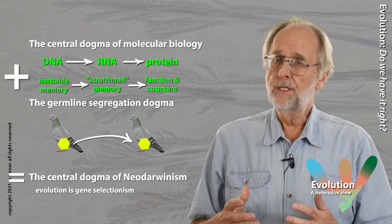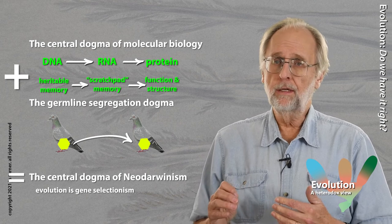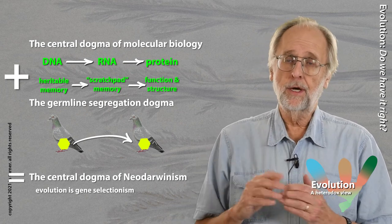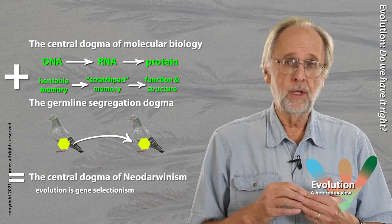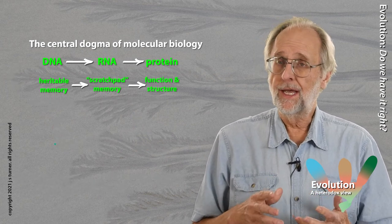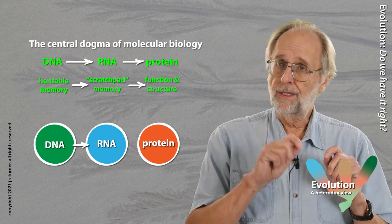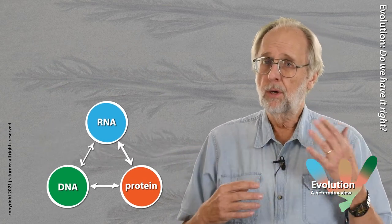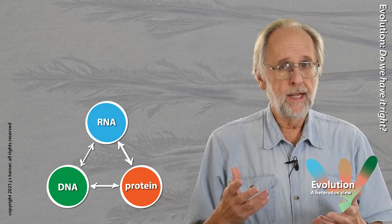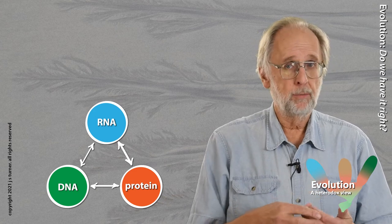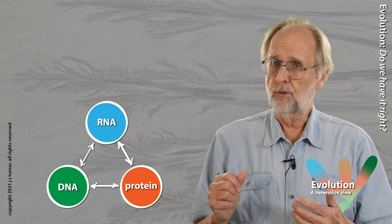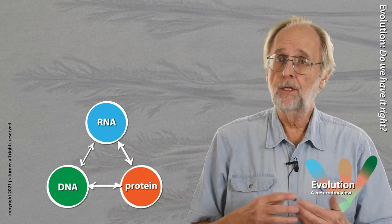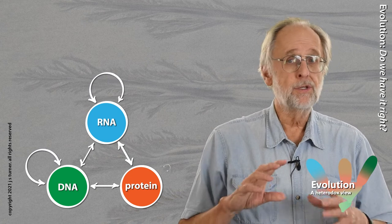Our growing understanding of the gene, of hereditary memory, and of the translation of sequence code to function has completely undercut both the central dogma and the doctrine of germline segregation. Now, rather than DNA, RNA, and protein being organized into a linear one-way network, the three components look more to be organized into a fluid network, with each component influencing the other. DNA can determine RNA, and RNA can specify proteins — that's the central dogma — but the reverse is also true. RNA can edit DNA or other RNAs, and proteins can act to modify both RNA and DNA. And finally, DNA, RNA, and proteins all interact with themselves.